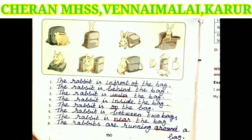Third one: the rabbit is under the bag. Fourth one: the rabbit is inside the bag. Fifth one: the rabbit is on the bag. Sixth one: the rabbit is between two bags. Seventh one: the rabbit is near the bag. Eighth one: the rabbits are running around the bag.